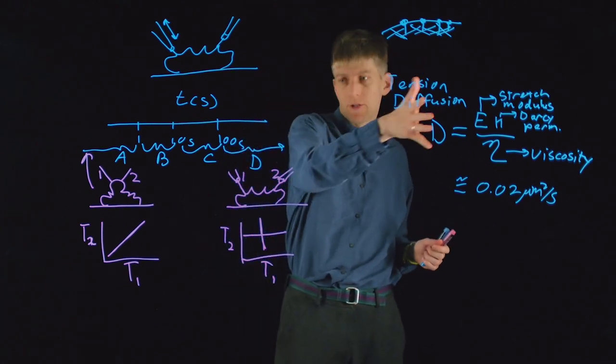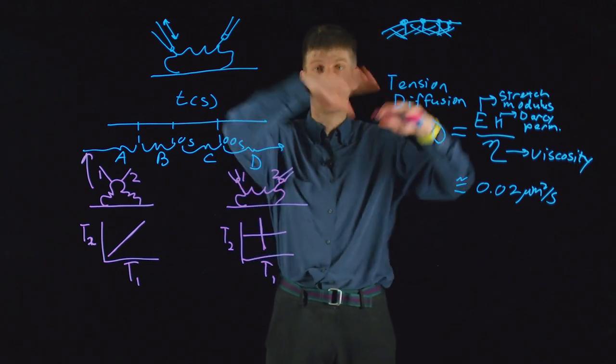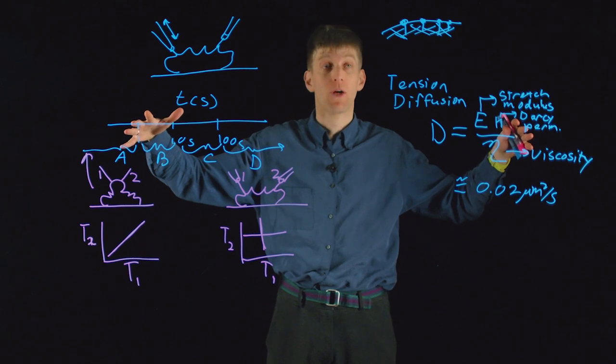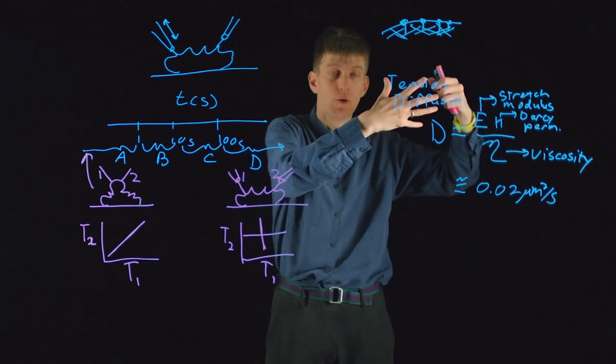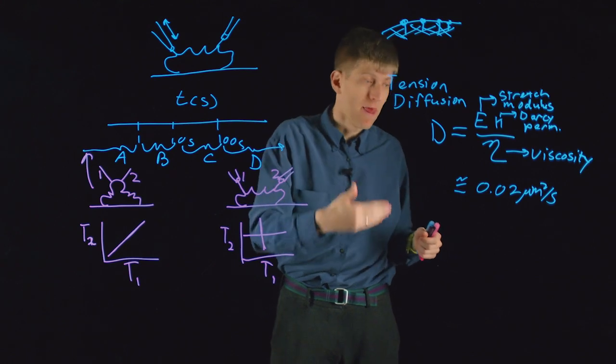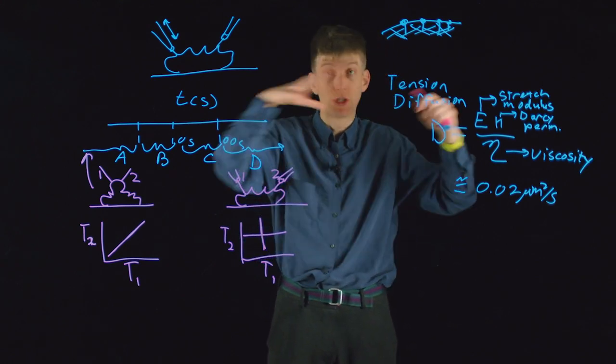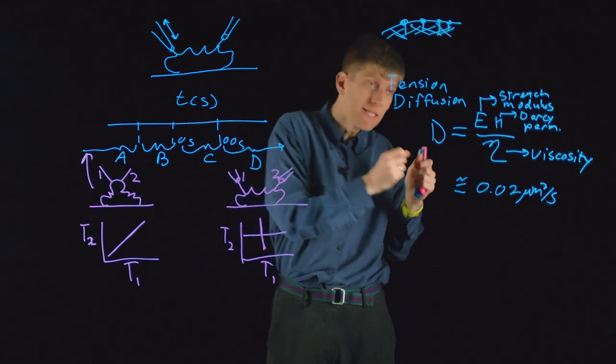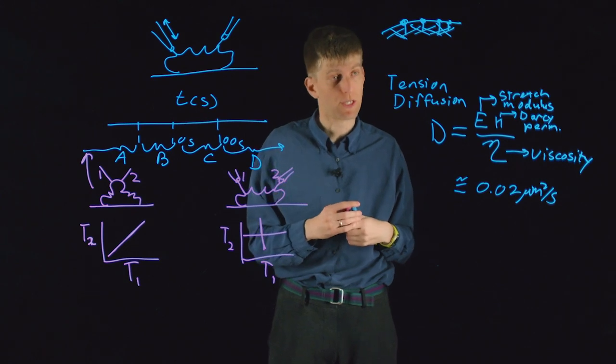This model and the experimental results suggest that tension is not a mediator of long-range signaling within cells. Perturbations to tension that are local remain localized. On the other hand, that implies that tension might have heterogeneities across the cell and mediate different processes in different parts of the cell. So it can mediate local signaling.